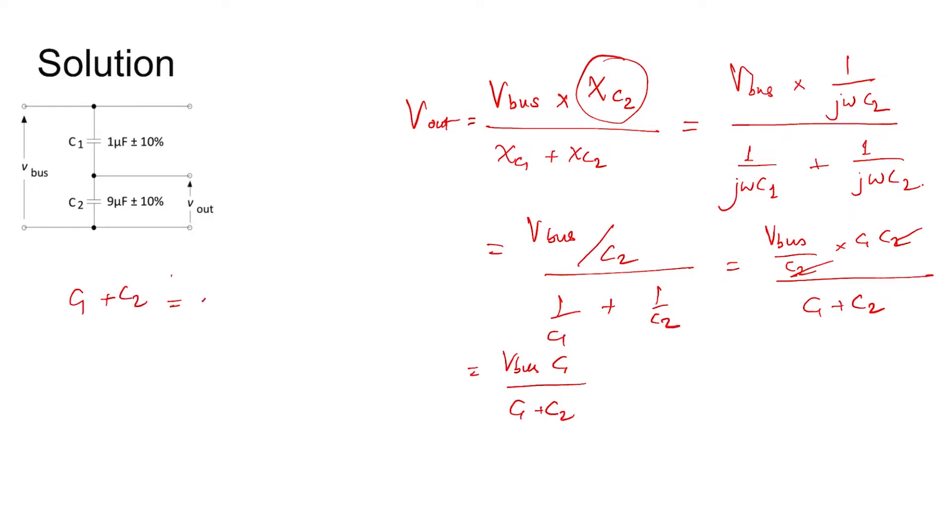If we do, we get 10 microfarad plus 20 percent. This is wrong, because I told you, relative error will only get added during product and division.